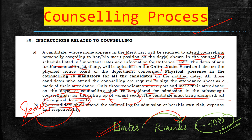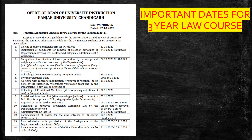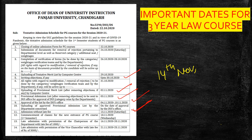Important dates: raise objections by 31st October 2020. Uploading of provisional merit list: 2nd November 2020. Provisional admission list sent to DAU office for approval, then uploaded from 4th November to 10th November 2020. Fees deposit for admission without late fees: by 14th November 2020 — by then you'll know if you got admission. Commencement of classes: 18th November 2020.